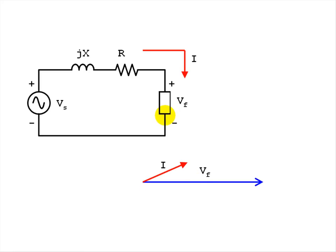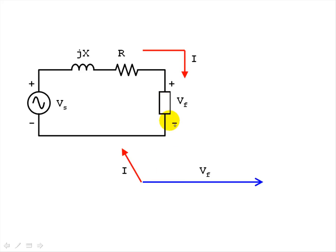Now the load has become capacitive — the current leads the voltage at the load, and the angle theta F is negative. The load has become purely capacitive: its current leads its voltage by 90 degrees and can be represented with a capacitor. Beyond that we have a generator, which we will visit later. For now, let's stay with loads whose theta F stays between minus 90 and plus 90 degrees.